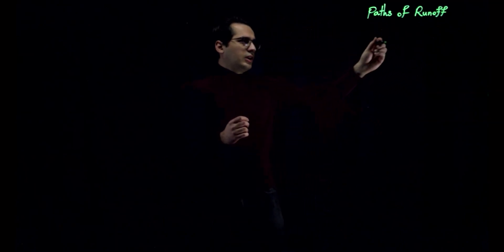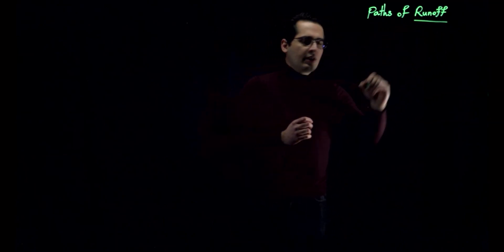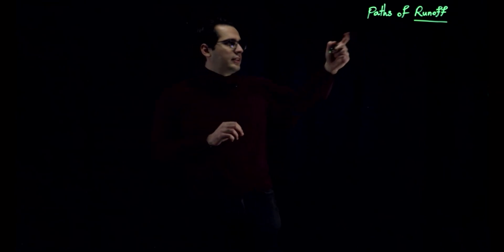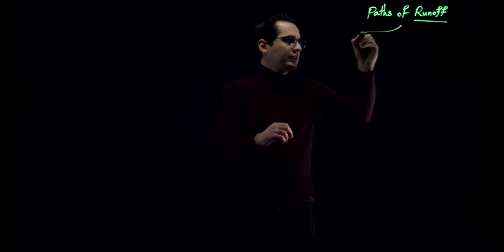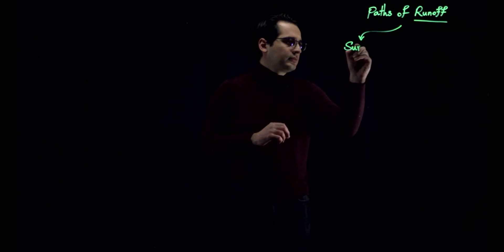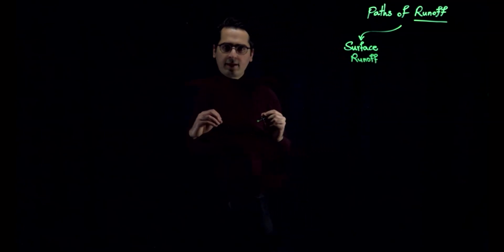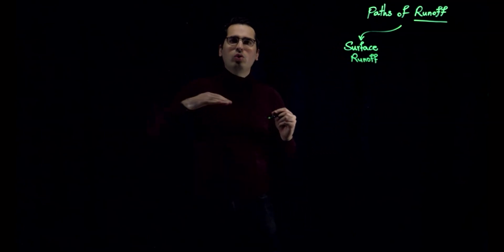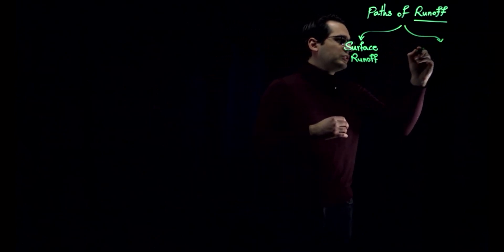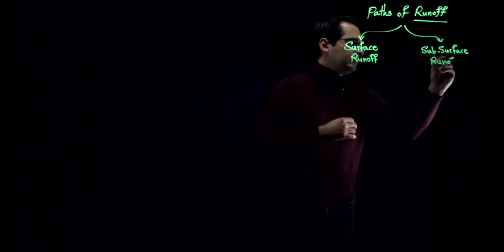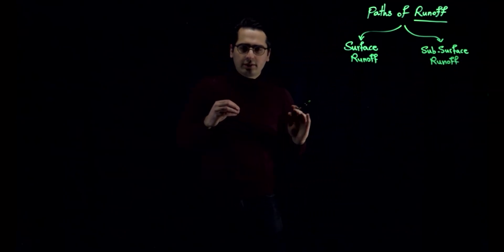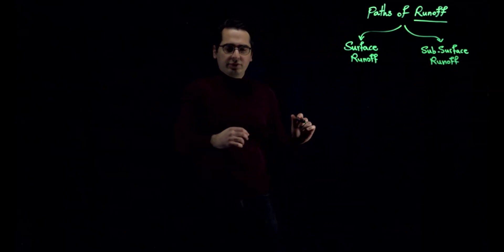First of all, let's define runoff. Water in a flowing state is called runoff. This runoff can be divided into two categories. One is surface runoff, which is water that flows over the ground. The other category is subsurface runoff, which is the water that flows under the surface of the ground.